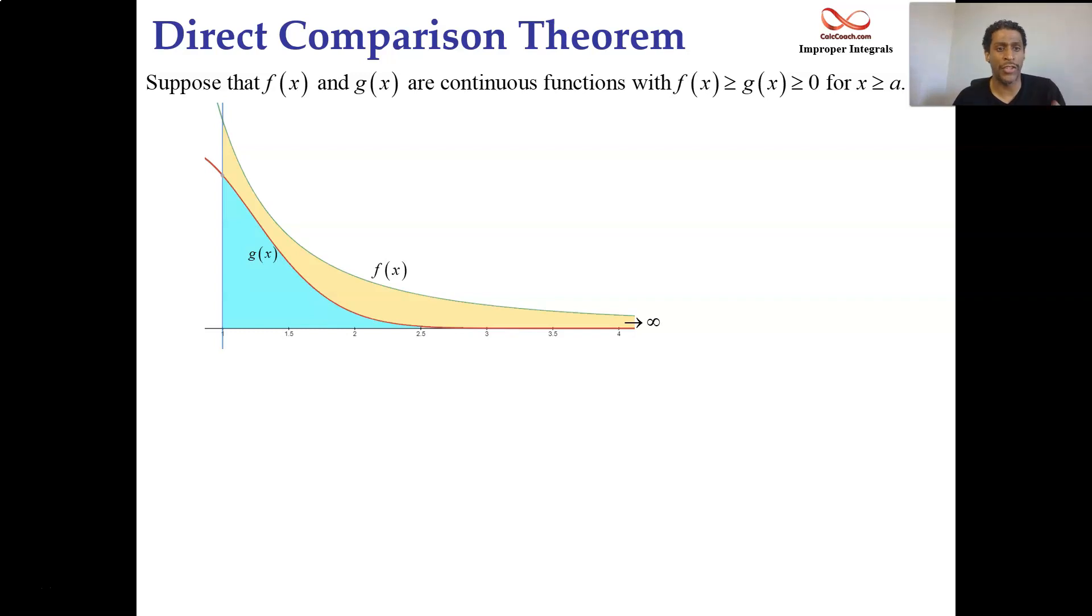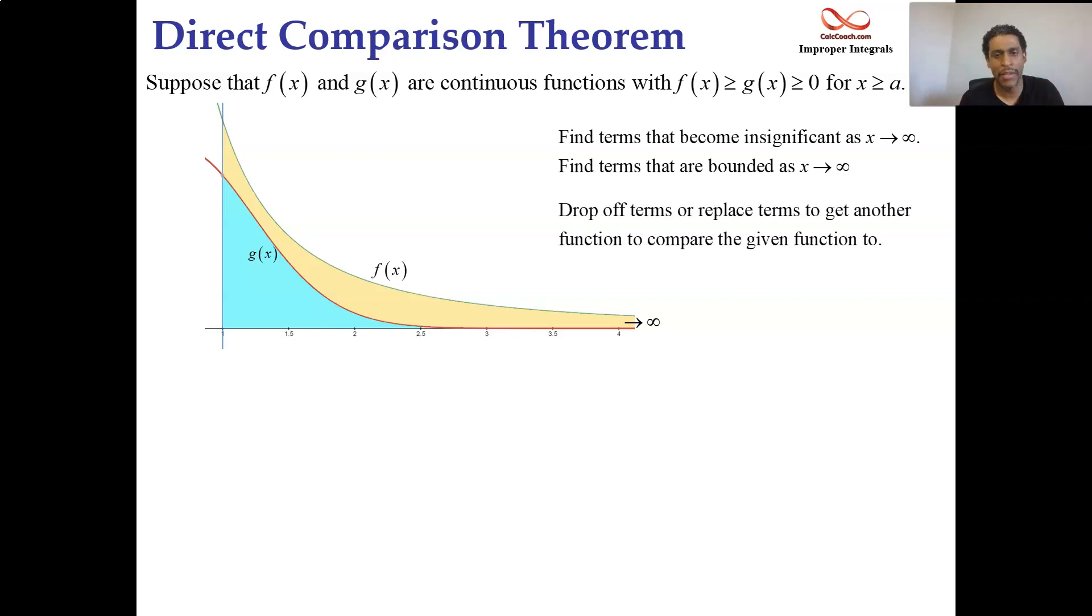And here's what you are to do. You're given an integral, you don't know whether it's the smaller or the bigger one, but you have to then go out and get another function and compare the one you're given to this other function. How do you go out and get this other function? You should be seeking out in the function that you're given terms that become insignificant as x goes to infinity. Also you should be looking for terms that maybe they're bounded as x goes to infinity. These are the terms that you seek out and what you do with these is either you drop them off or you replace them, somehow you end up with another function by that process.